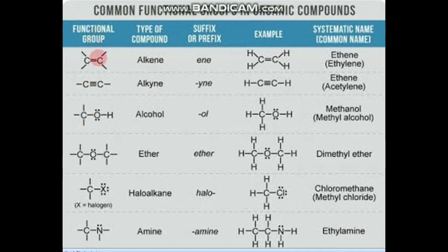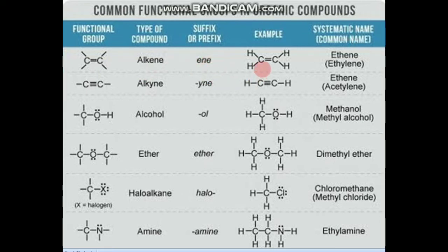Now we will discuss common functional groups in organic compounds. Here is a table: here are functional groups, here are types of compounds, here are suffix and prefix, here are examples of functional groups, and here are the names of the examples. Looking at the first functional group: when two carbon atoms are double bonded, it is an alkene type of compound. The suffix used is -ene. For example, two carbon atoms double bonded is called ethene — eth for two carbons, and -ene for the alkene family.